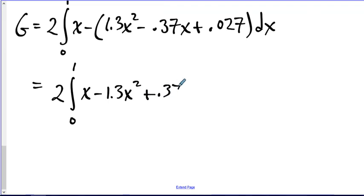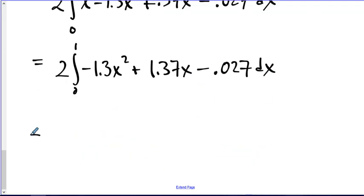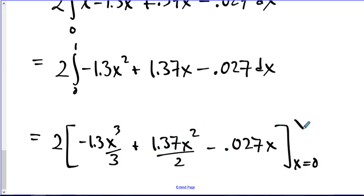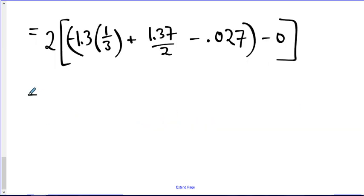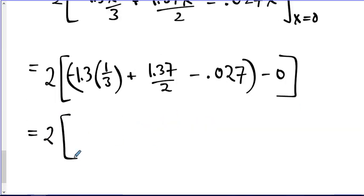So we write in the function and distribute the negative, combine some like terms, and find an antiderivative. Plug in the bounds, evaluate when you plug in 1, when you plug in 0 it's still 0. So this all works out.